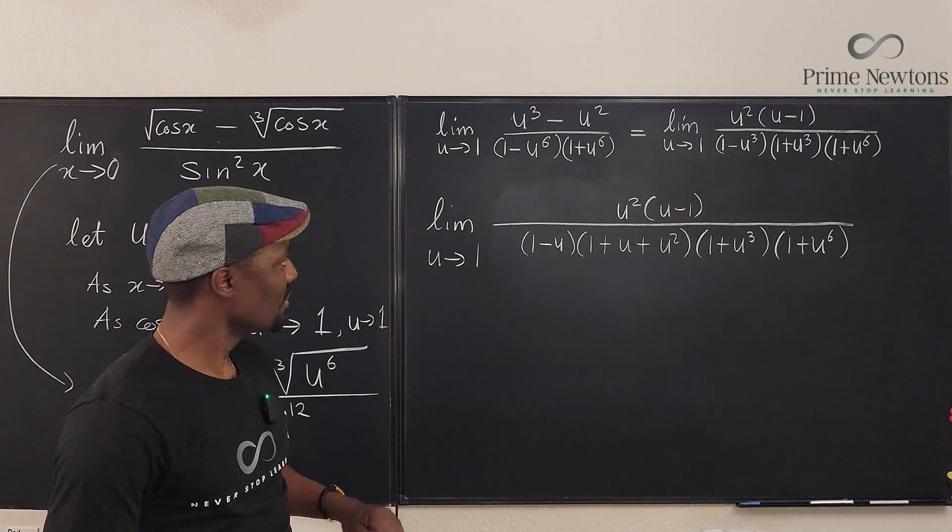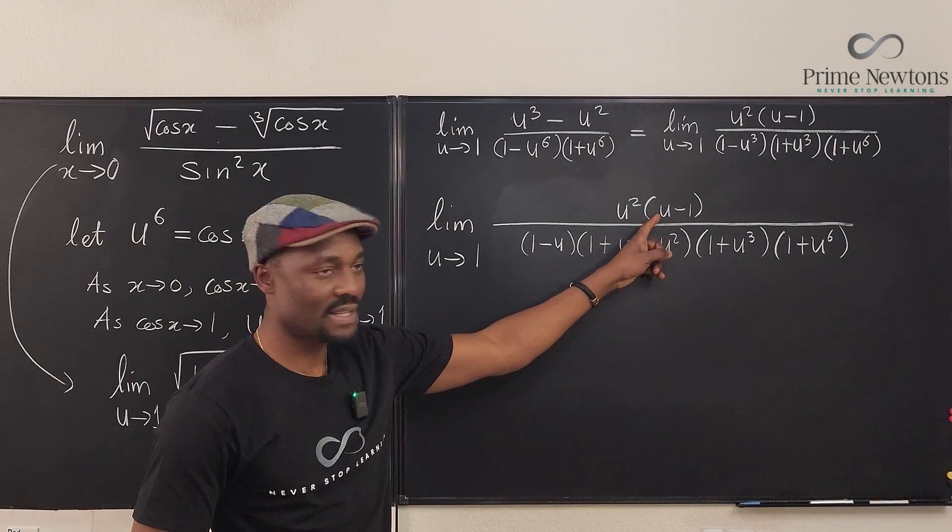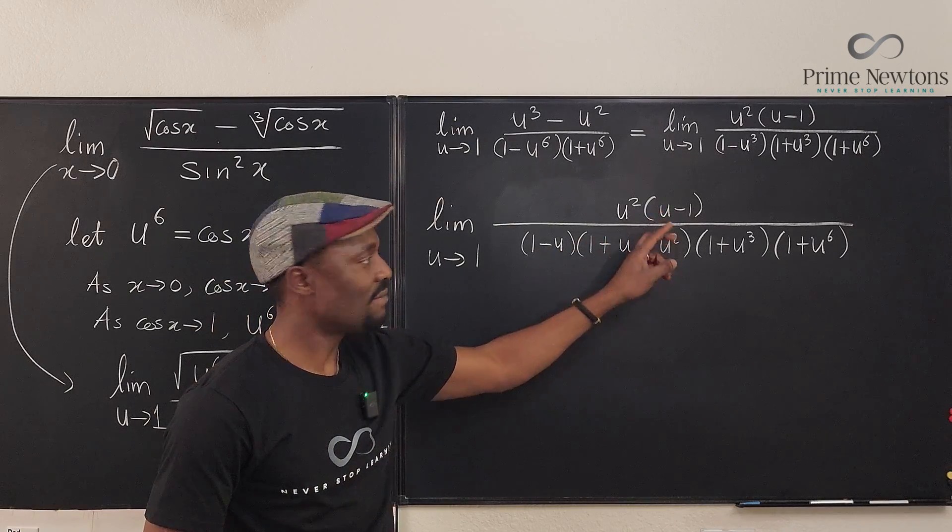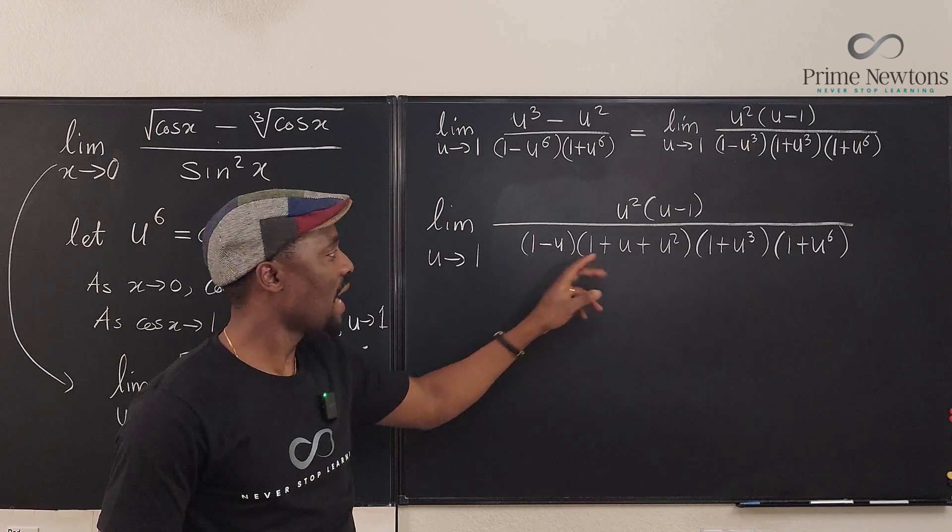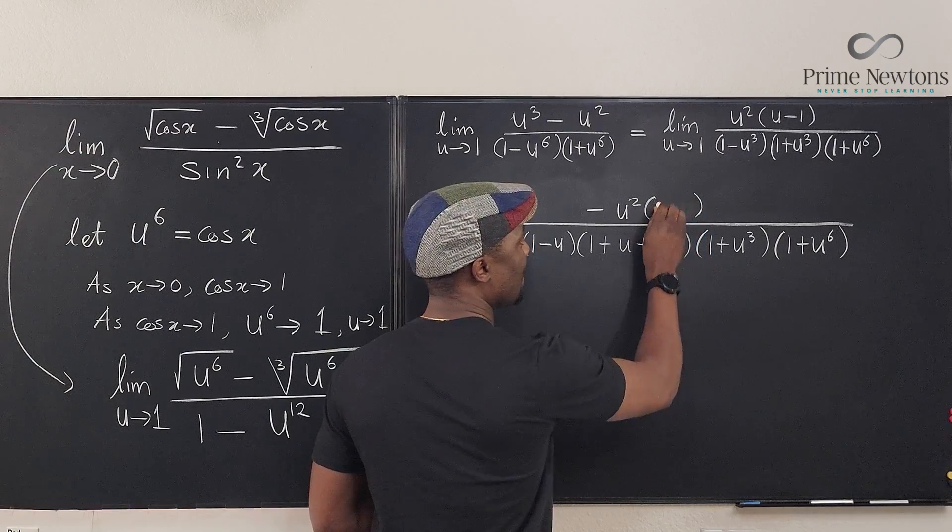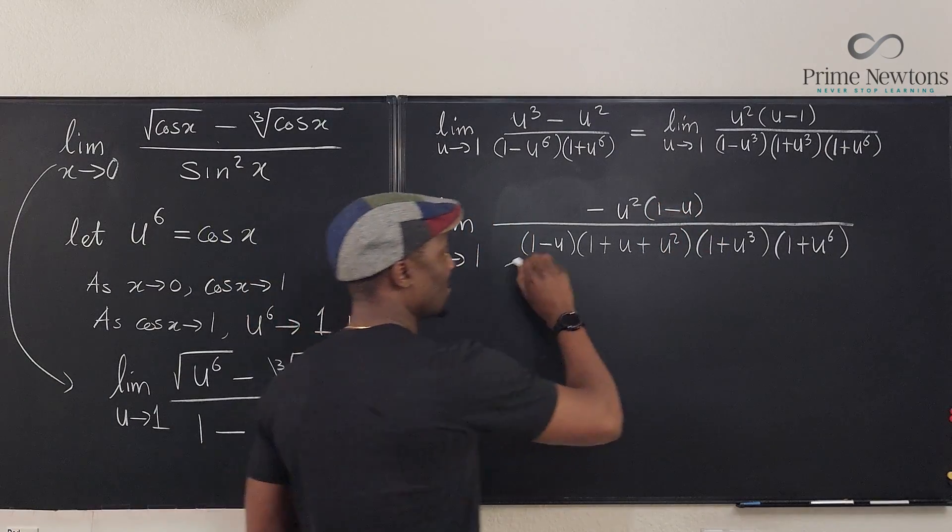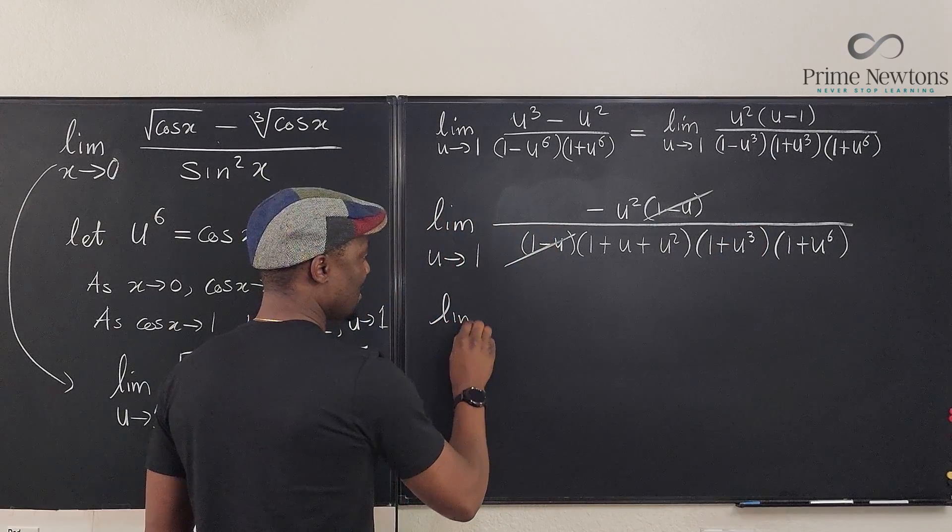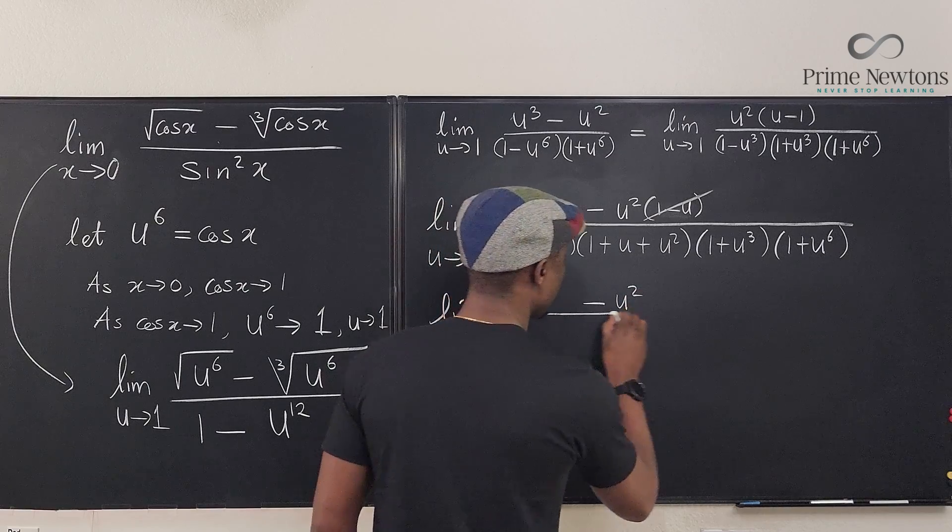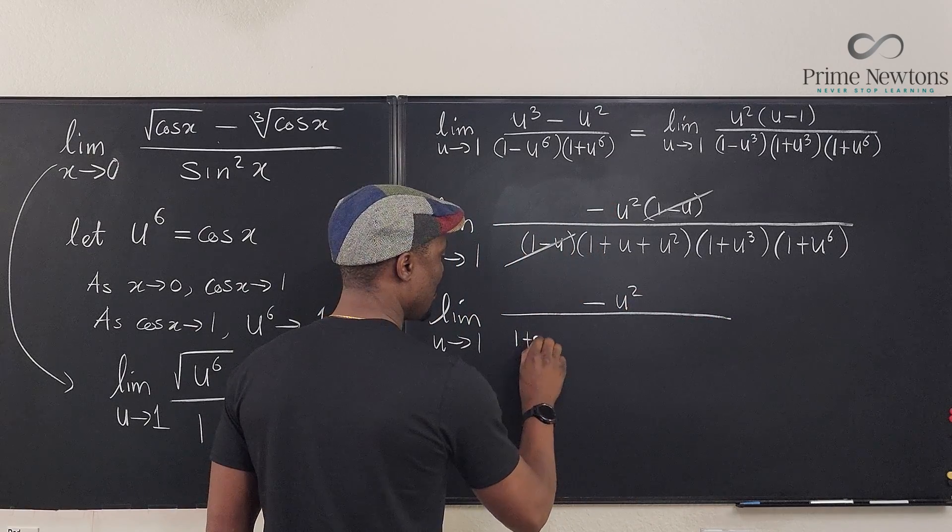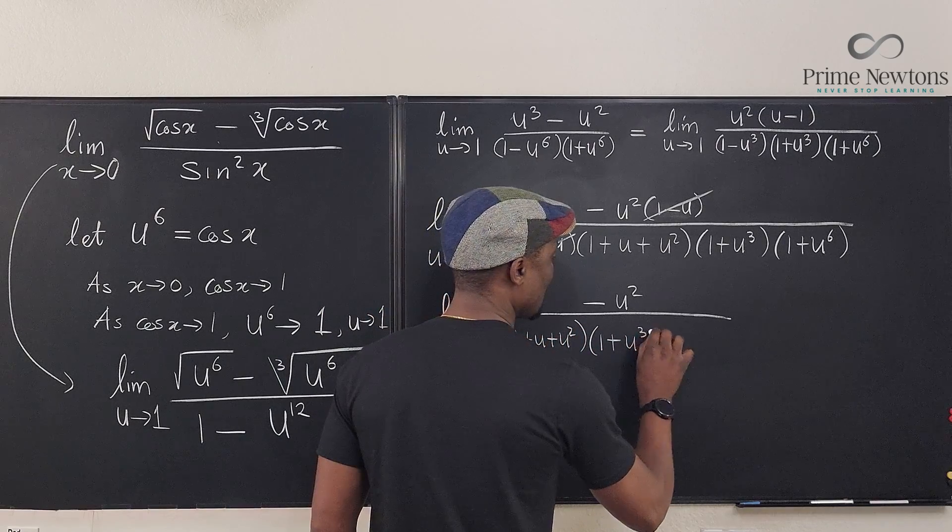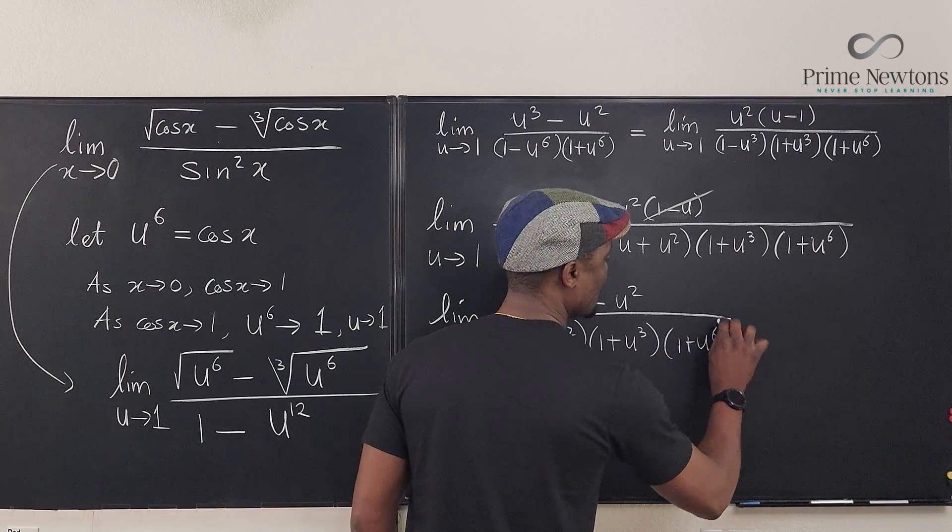So what do we do? Well, it looks like this and this look alike. It's just that they are switched. So if I divide this by this, I'm going to get minus one, right? Because this is u minus one, this is one minus u, or I can rewrite this as minus one minus u. Nice. So now this can cancel this out so that what I have left is the limit as u goes to one of negative u squared divided by one plus u plus u squared, one plus u cubed, one plus u to the sixth.